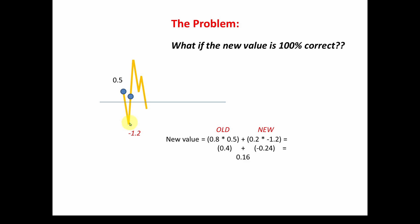And if it is correct, the minus 1.2 is correct. And let's say it stays at minus 1.2. What you can notice is since you're only taking 20% of whatever the new value is, you're not taking 100% confidence in the new value. Here we went from 0.5 to 0.16.